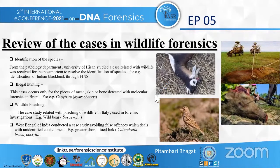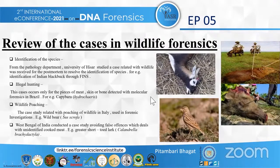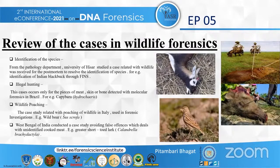Review of the cases in wildlife forensics. Cases for the identification of species involve illegal hunting and wildlife poaching. Identification of species related to wildlife was received for post-mortem to resolve species identification — for example, identification of Indian blackbuck through fish. Illegal hunting involved species of meat, skin, or bone detected with molecular forensics in Brazil — for example, capybara species Hydrochaerus. Wildlife poaching study related to poaching in Italy used in forensic investigation, for example, wild boar.